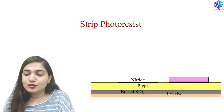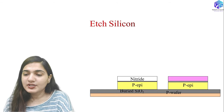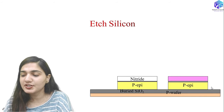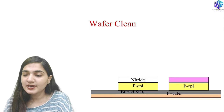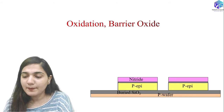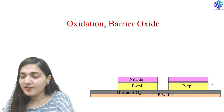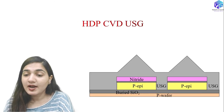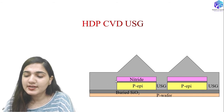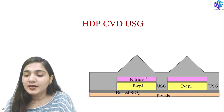After stripping the photoresist, we etch out the silicon from the epitaxial layer to form the shallow trenches. After wafer cleaning, we do an oxidation process to deposit a barrier oxide layer at the surface of the P-type epitaxial layer. Then, high-density plasma CVD (HDP-CVD) is used to deposit undoped silicate glass (USG) to fill the shallow trench isolation regions.